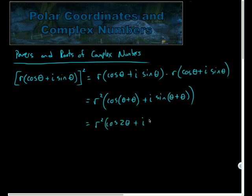If this was cubed, then I would have multiplied by another set of it, and I would have had r cubed here, and it would have been cosine of theta plus theta plus theta, and sine of theta plus theta plus theta, or cosine of 3θ and sine of 3θ.